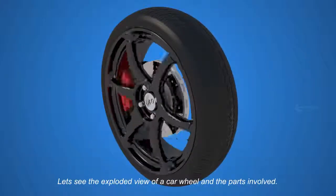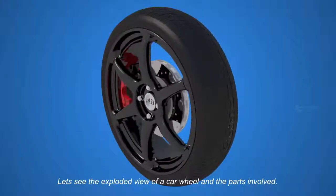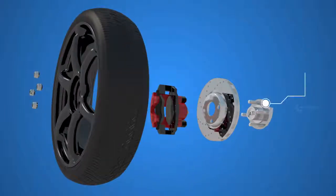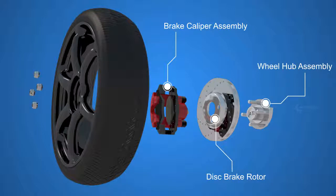Let's see the exploded view of a car wheel and the parts involved. The wheel hub assembly, the disc brake rotor, the brake caliper assembly, the wheel, and the lug nuts.